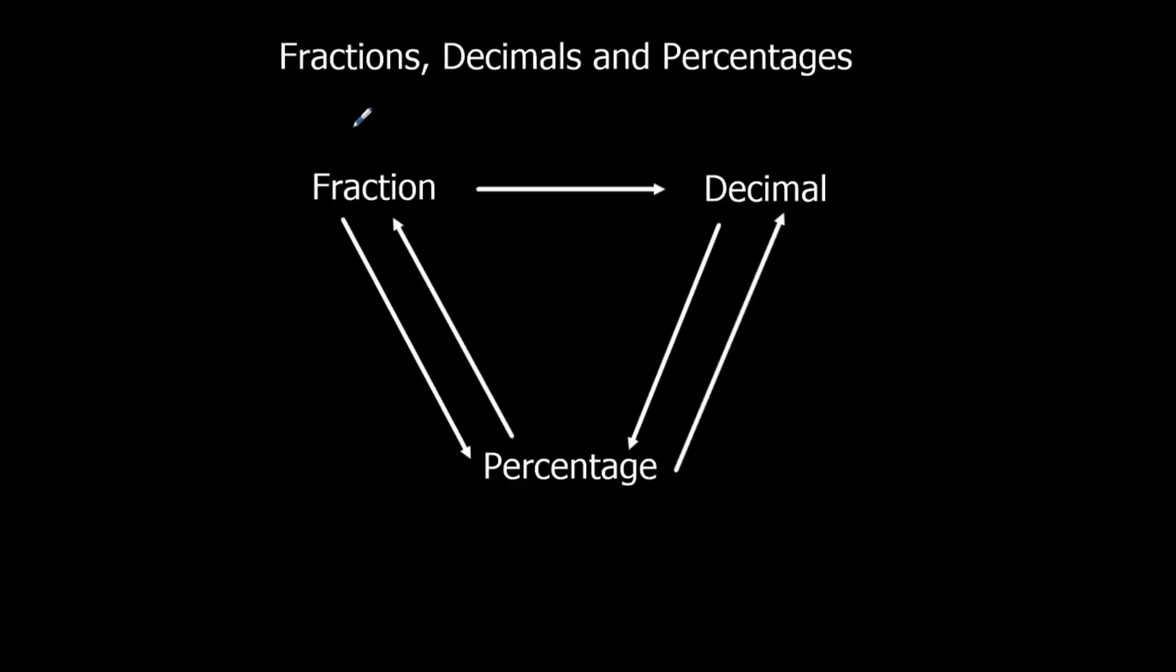Start with a fraction now. Let's go with 11 out of 20. We can convert the fraction to a decimal by doing 11 divided by 20. We might want to use the calculator. It's 0.55. Then we can do the decimal to a percentage by times it by 100. That'll give us 55%. And we can go in any of these directions. Decimal to fraction is quite hard, so it's easier to change it to a percentage first, times it by 100, and then write it as a fraction over 100 to convert it to a fraction.